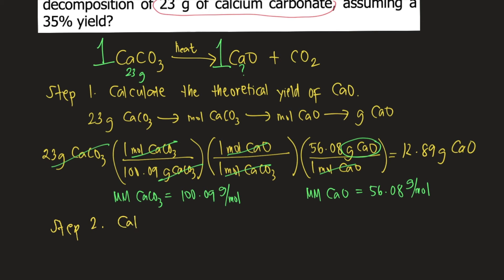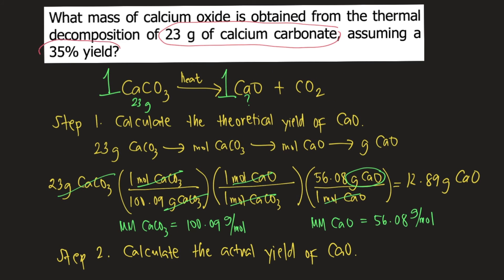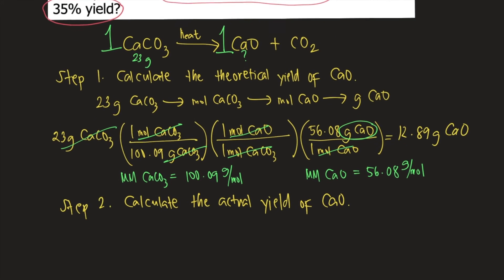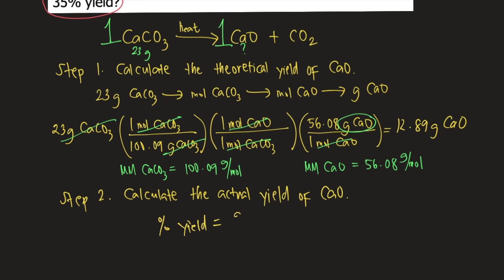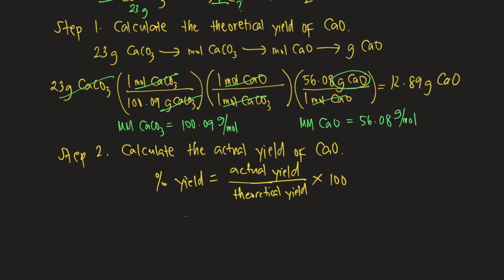Step two: calculate the actual yield of calcium oxide, because the problem is asking for the actual yield. According to the problem, the percent yield is 35%. The formula for percent yield is: actual yield divided by theoretical yield, times 100. So the percent yield is 35%, the theoretical yield from step one is 12.89 grams, and the actual yield is unknown.